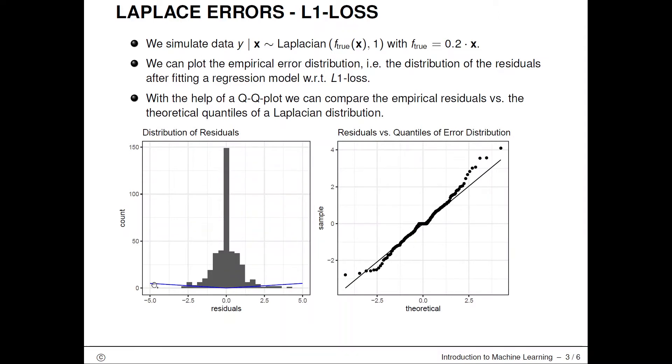We can plot the empirical error distribution on the left hand side and compare with the help of a Q-Q plot the empirical residuals versus the theoretical quantiles of the Laplacian distribution. You can see that this at least roughly coincides.